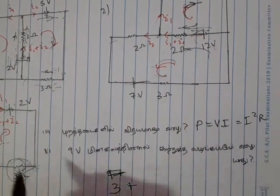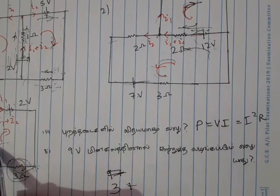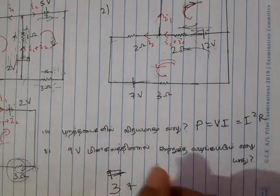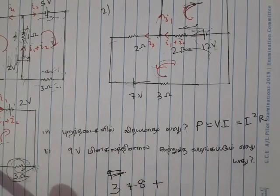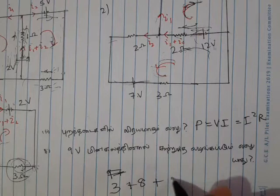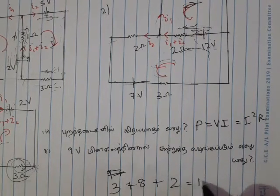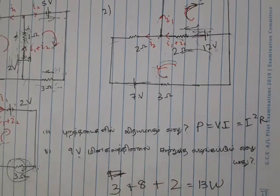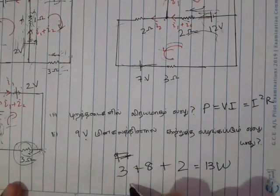3 VAT. This is i1 plus i2, which is 2A. 9 VAT is very important. 9 VAT. It is 12 VAT. So if you look at this, 5 VAT. How do you look at this 5 VAT? This is 2 VAT.